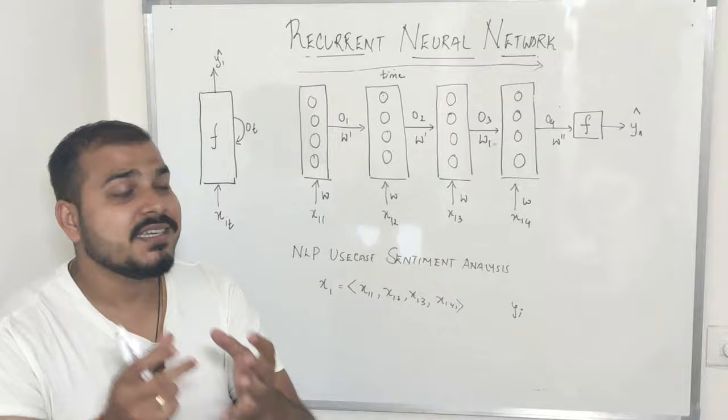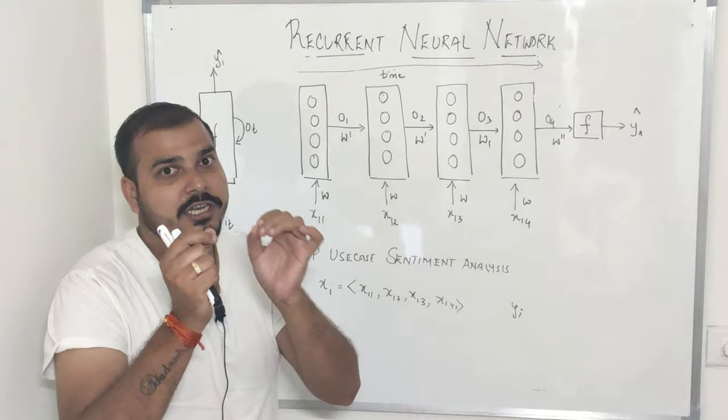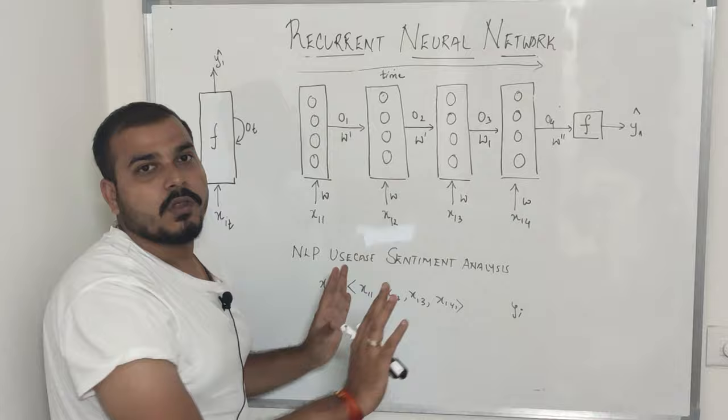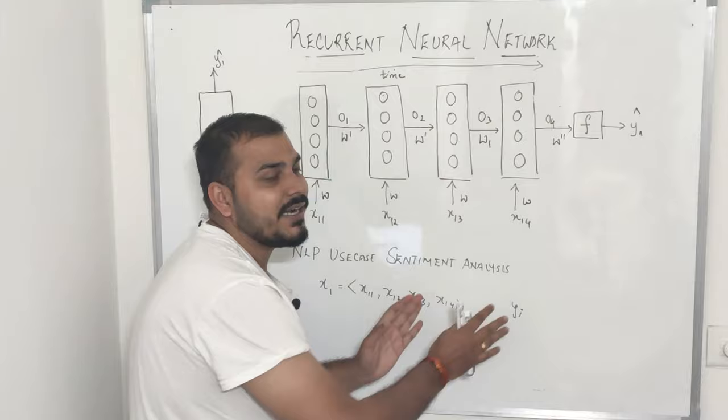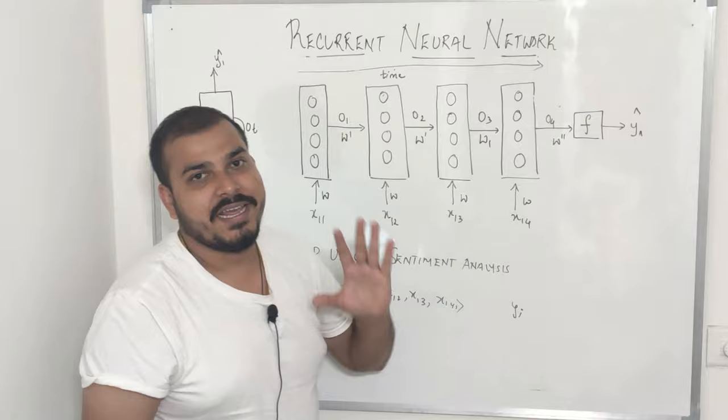Now I'll make you understand what exactly I'm telling you. I'll try to expand this whole diagram. This is my general architecture of a recurrent neural network. I'm trying to solve this NLP use case of sentiment analysis and I'm discussing about the forward propagation — how forward propagation will take place.